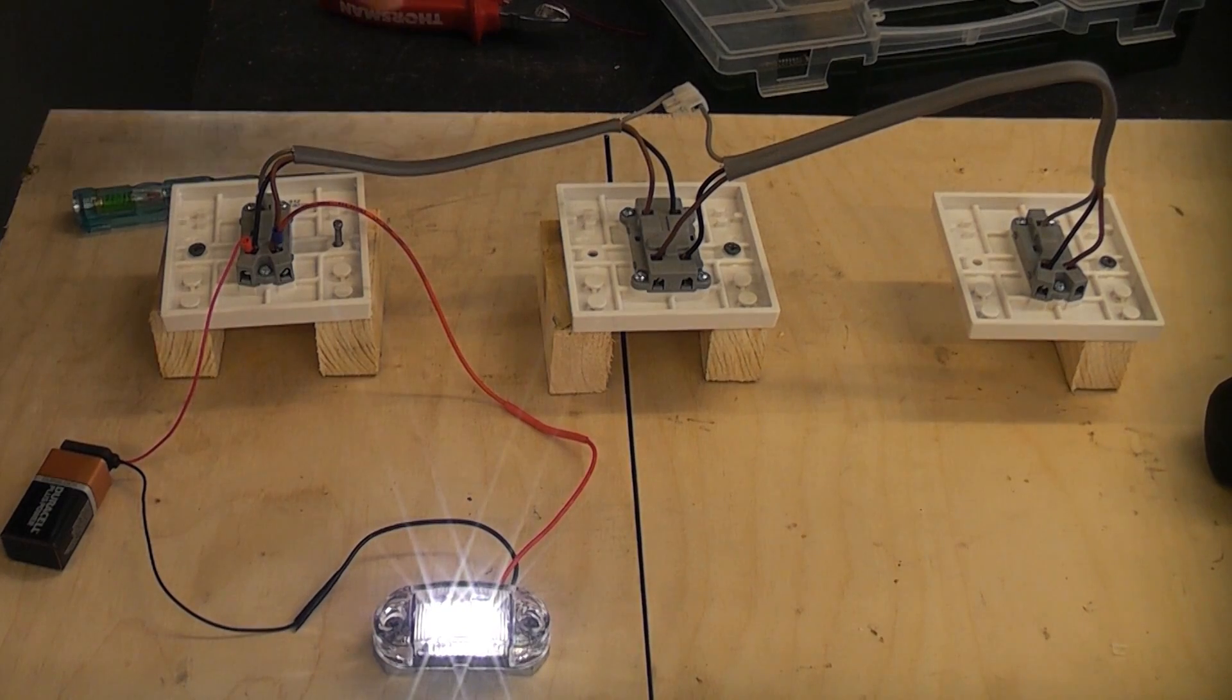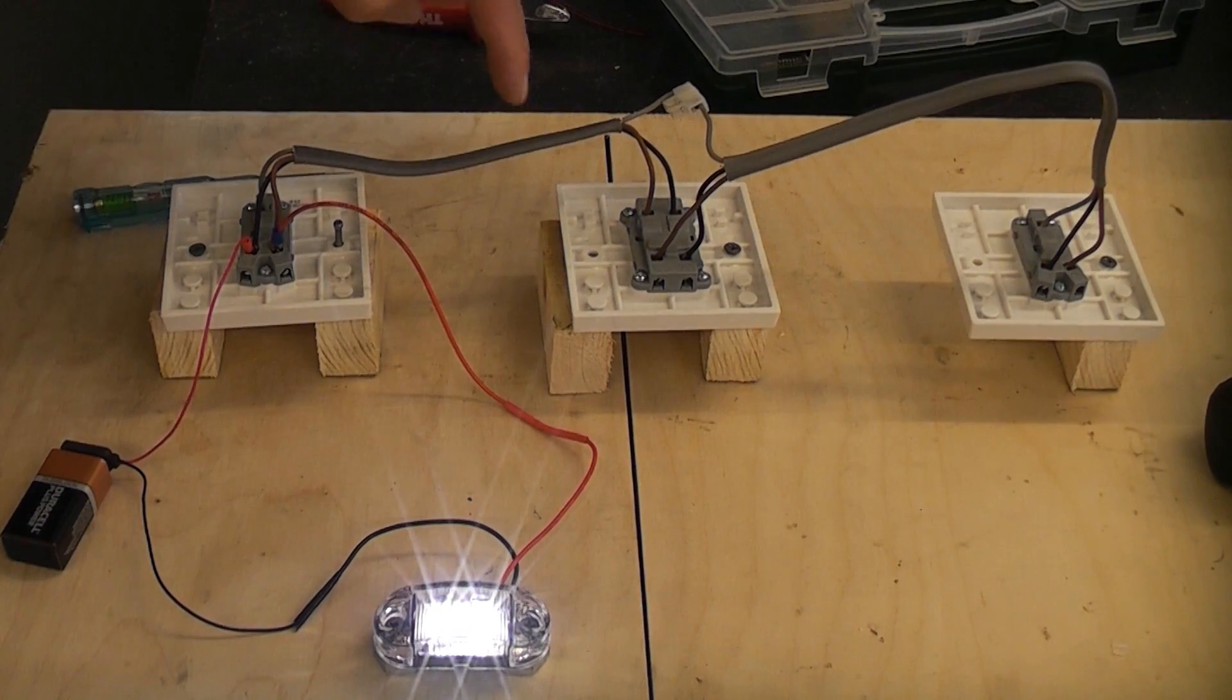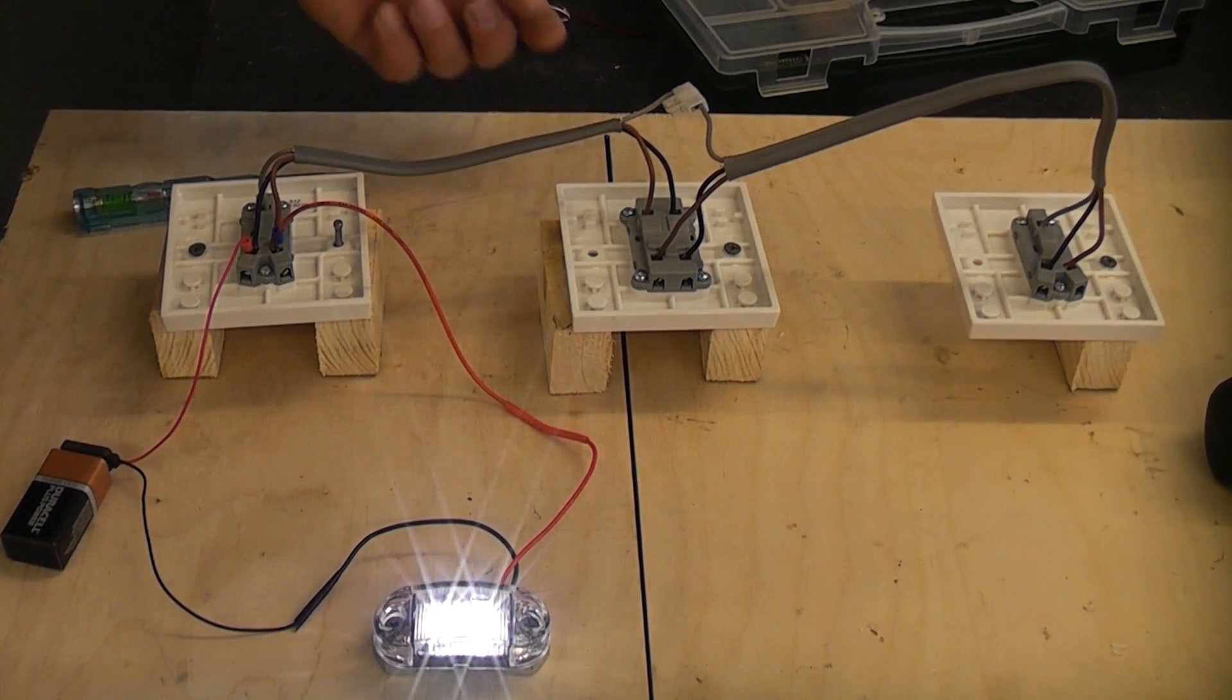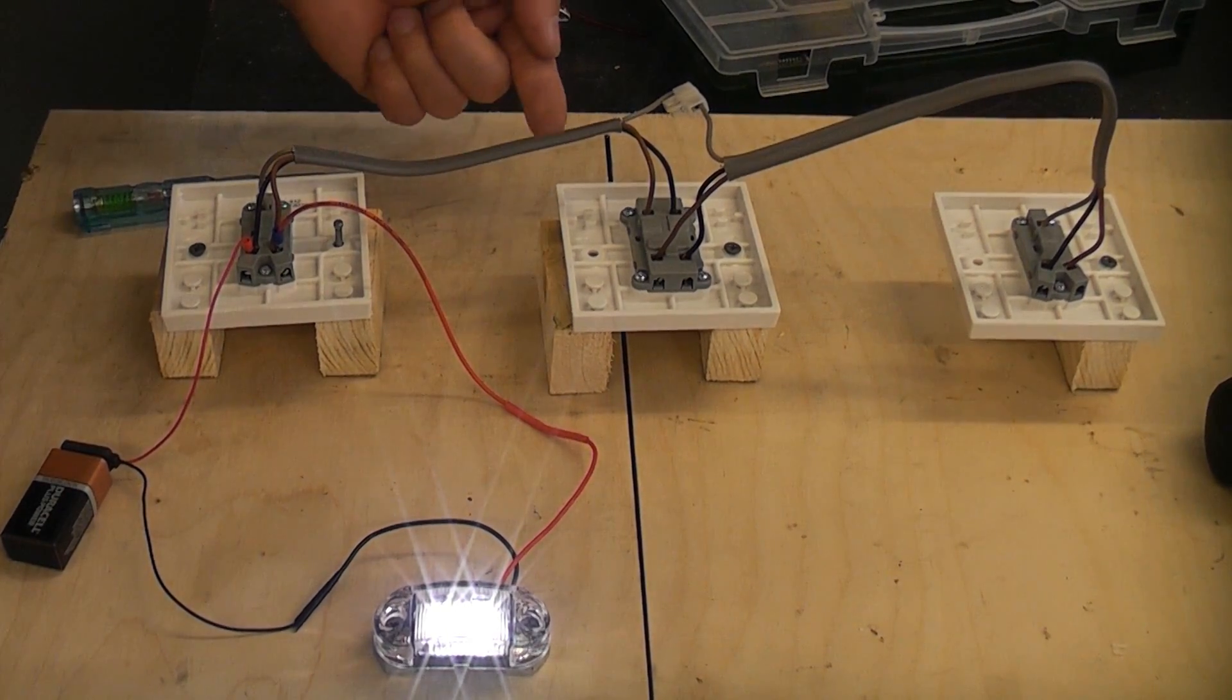So that's how to wire up a three-way lighting circuit. It is incredibly easy. All you need to do is use an intermediate switch in the middle and as I've said you can use more than one of those if you like.